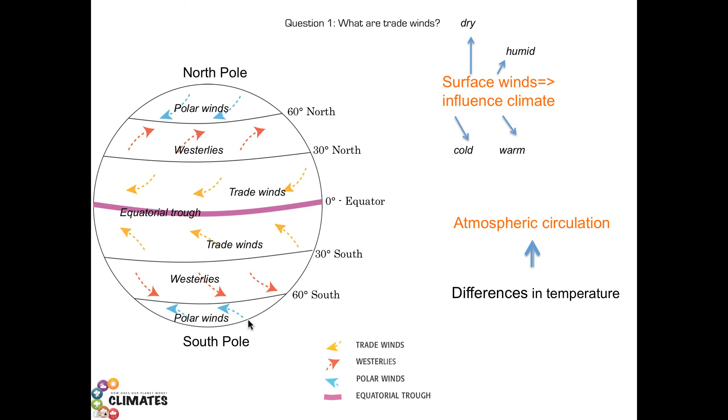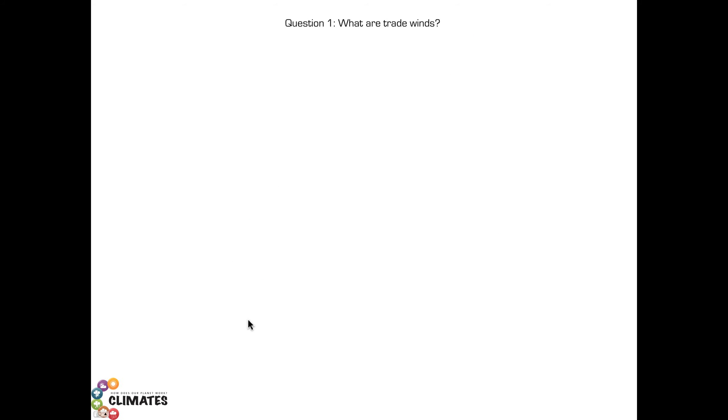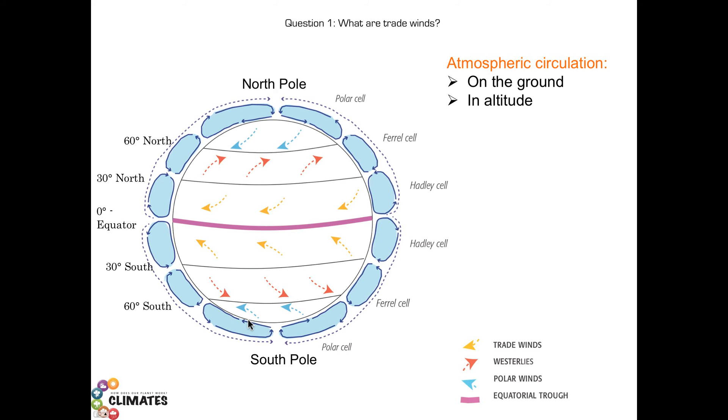The atmospheric circulation is present on the ground, but also in altitude. Here we take the same figure, but with some additional details. You can find again the westerlies, the polar easterlies. You can notice some cells here. I will briefly explain what is going on between the ground and the altitude. At the equator, the warm air, which is less dense, ascends in altitude.